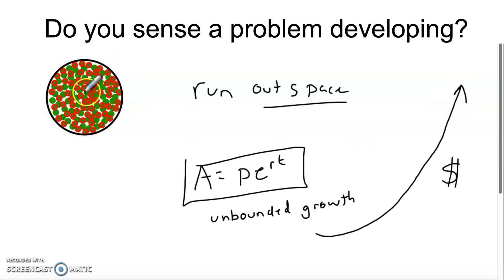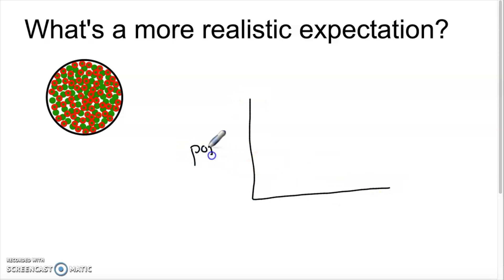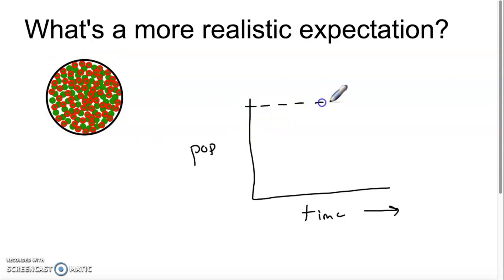But if we're talking about bacteria in a bowl or any other natural phenomenon, there's a finite amount of space. Even if you consider the petri dish to be the entire universe, at some point you'll run out of space. So what would a more realistic expectation look like? If we graph population of bacteria over time, bacteria grow of course, but there's some finite amount of space — a maximum amount that'll fit into the petri dish.